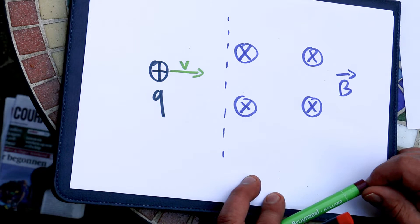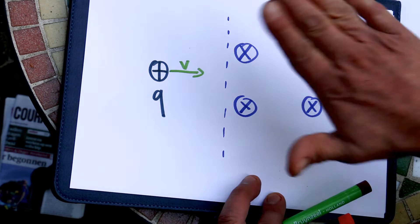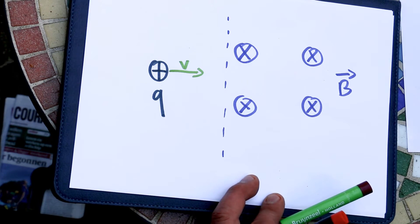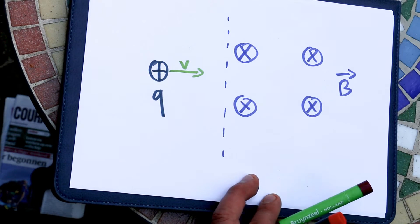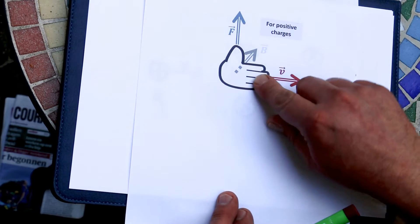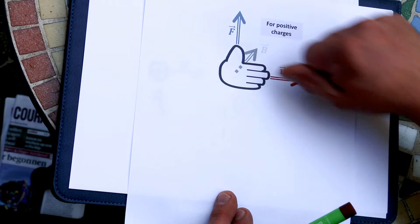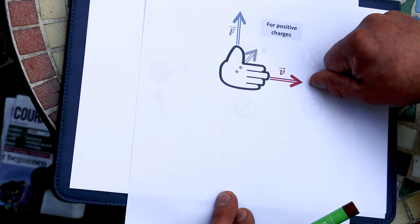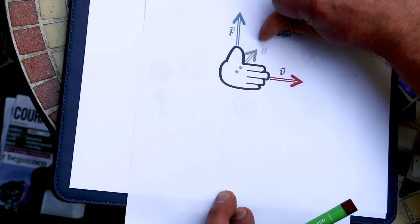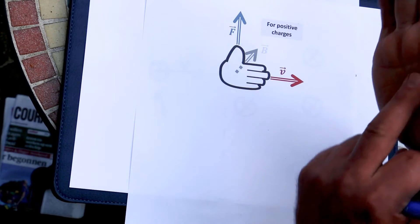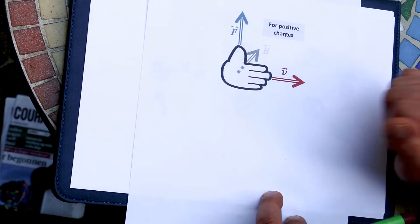What direction would be this force? Well, you can define this using the flat hand rule, which is a hand rule that is very practical because it's always a right hand and it always works. When you hold your hand flat, the fingers will give you the direction of the motion of the charged particle. The field is given by the palm — what comes out of your palm is the direction of the field.